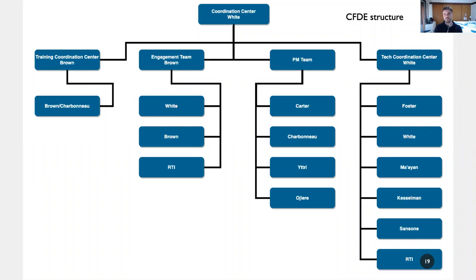The CFDE structure to tackle this wicked problem is divided into four components: an overall coordination center at the University of Maryland headed by Owen White; a training coordination center just getting started this year that myself and Amanda Charbonnet are running; an engagement team consisting of my group at UC Davis, people from Owen White's group at Maryland, and RTI, a technology development company in North Carolina; and a project management team — coordinating all the moving parts both internally and across DCCs requires a lot of effort. And then there's a big tech coordination center with Ian Foster, Owen White, Avi Mayan, Carl Kesselman, Susana Sansone, and RTI, implementing technical coordination components across the Common Fund.